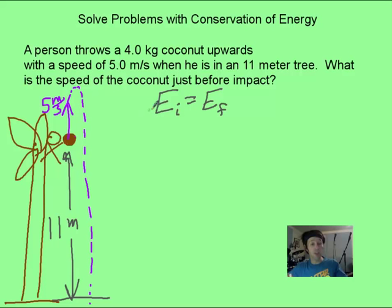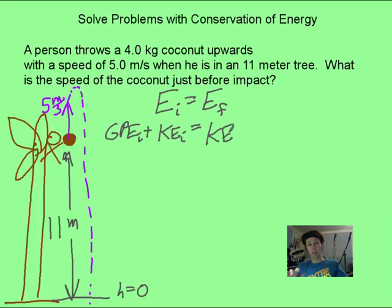Now initially, you should have two terms, because you've got gravitational potential energy initially going on because it's up in the tree, and you also have kinetic energy because he throws it. Just before it hits the ground, we're going to call this height of zero, so it has zero gravitational potential energy and only kinetic energy final. Sorry, the coconut has kinetic energy final. Now we fill in what we know.